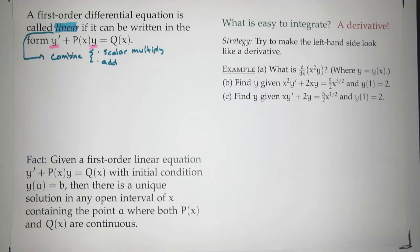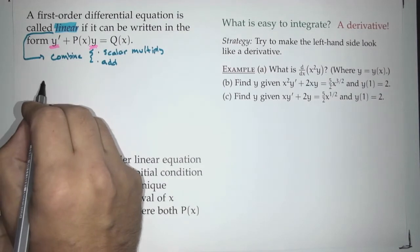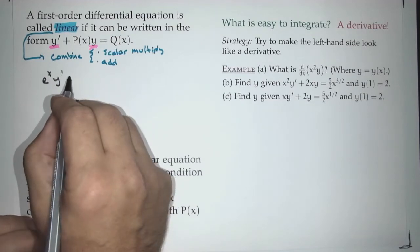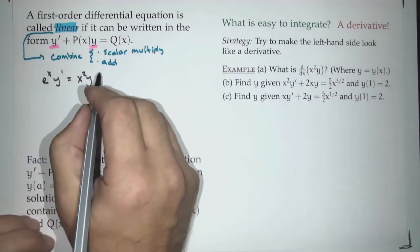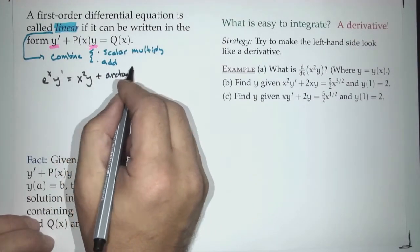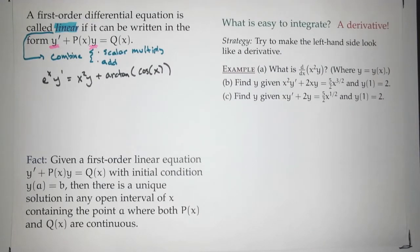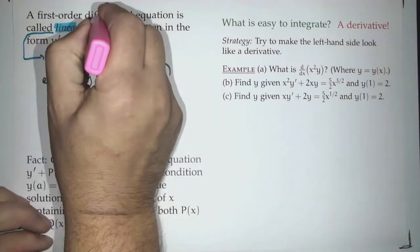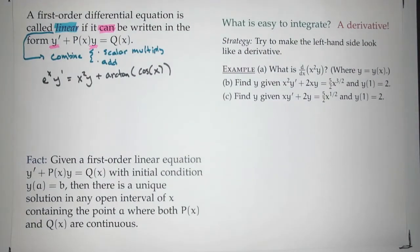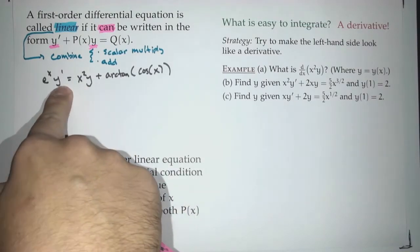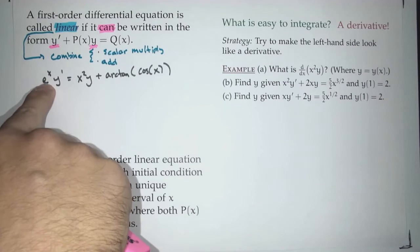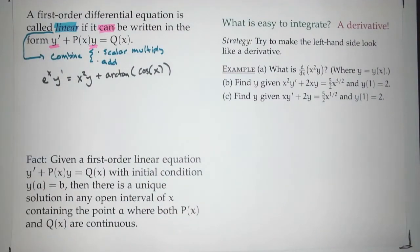Let's test ourselves. Suppose we ask the question: is e^x · y' = x²y + arctan(cos(x)) linear? Yes. Some people are saying yes, some people are being hesitant. Notice there's a key word: 'can.' It can be written in that form. You can move the x²y to the other side, and then divide by e^x. Then it's of the right form. So that is something which is linear.